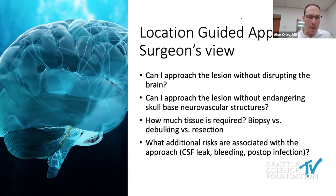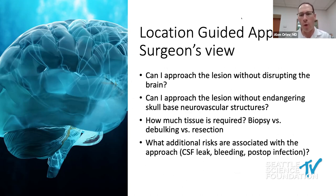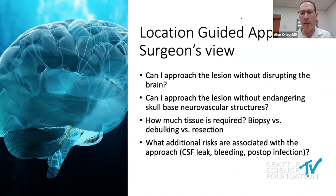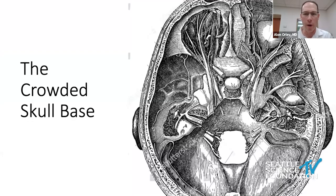The questions we ask ourselves, assuming we need to do surgery: Can I approach a lesion without disrupting the brain? Can I approach a lesion without endangering skull-based neurovascular structures? How much tissue is required — do I need a biopsy, debulking, or resection? And what additional associated risks are there — CSF leak, bleeding, post-op infection, among others? These are things we contemplate when we decide how to proceed.